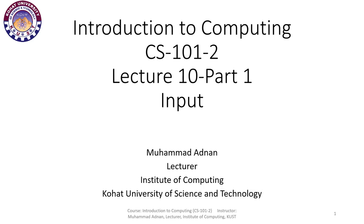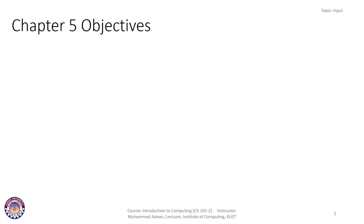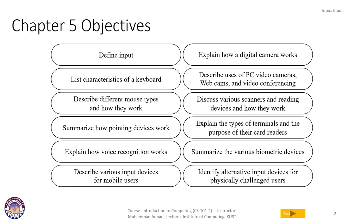There is a lot of detail, so we are going to go step by step. The objectives of today's lecture: we are going to define what is an input, list characteristics of a keyboard device, describe different mouse types and how they work, summarize how pointing devices work, explain how voice recognition works, describe various input devices for mobile users, explain how the digital camera works, describe the use of PC video cameras, webcam, and video conferencing, and discuss various scanners and reading devices.